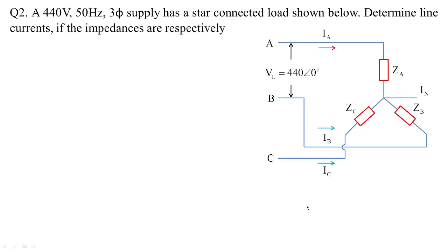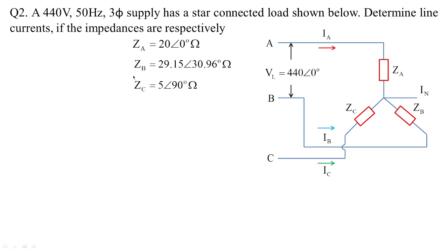Now for the star network problem with unbalanced loads: the given impedances are Z_A = 20 at angle 0 degrees ohms, Z_B = 29.15 at angle 30.96 degrees ohms, and Z_C = 5 at angle 90 degrees ohms. We need to calculate the line currents.